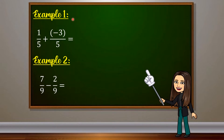For example number 1, let's add 1 fifth plus negative 3 fifths. Copy the denominator, which is 5, and then add the numerators. We are adding numerators with different signs, applying the rule in adding integers — we subtract and copy the sign of the bigger number. So 3 minus 1 gives us 2, and we copy the negative sign. Therefore, 1 fifth plus negative 3 fifths equals negative 2 fifths.